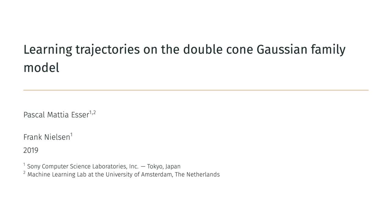In this video we will revisit the double cone model, a toy model to examine learning dynamics in singular statistical models. From there we will propose to use stratifolds, a generalization of smooth manifolds, to describe the parameter space of such singular statistical models and use the resolution of stratifolds to speed up the convergence and avoid attractor behavior near the singularity.